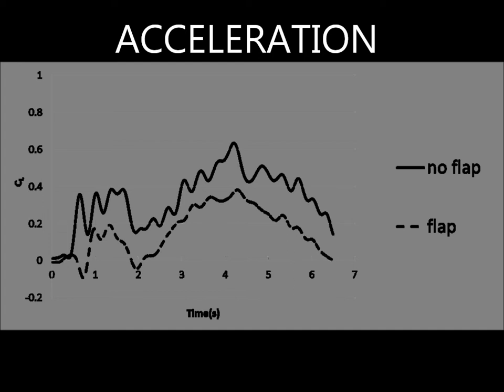We deduced that a possible reason for this is that the flap interrupted the growth of the vortex. When accelerating, the vortex usually grows in size and generates larger lift. However, with the flap in place, this growth is limited after a certain point, thus reducing the lift generated.